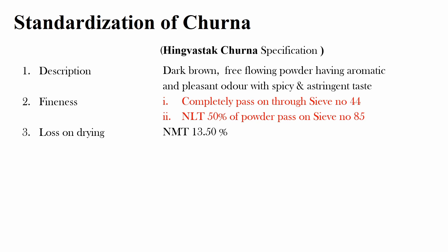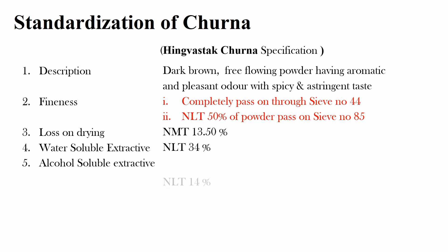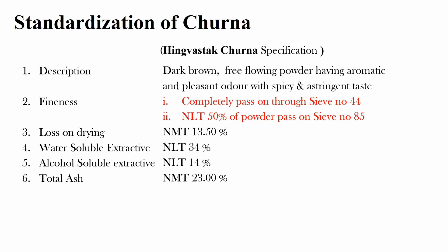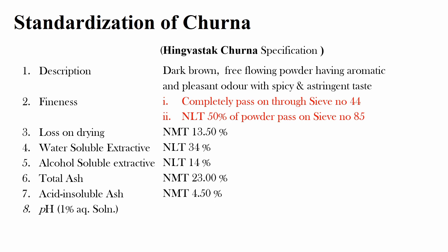Hing Vastak Churn is a herbal formulation, so it is also tested for extractive value and ash value. The water-soluble extractive should not be less than 34%, and the alcohol-soluble extractive should not be less than 14%. The total ash should not be more than 23%, and the acid-insoluble ash should not be more than 4.5%. The pH of 1% aqueous solution of Hing Vastak Churn is 6.4 to 6.6. Hing Vastak Churn is also required to comply with a thin layer chromatography test as given in the pharmacopoeia.